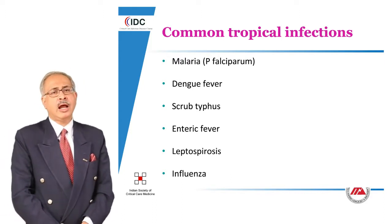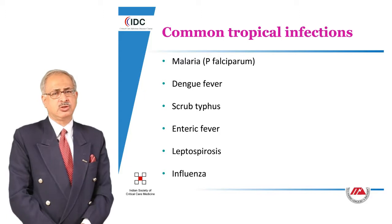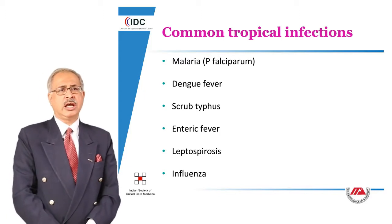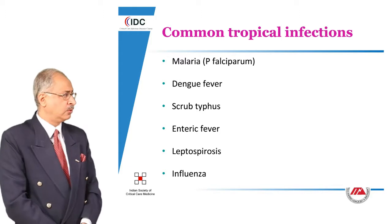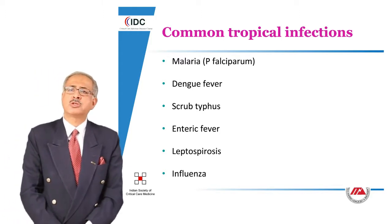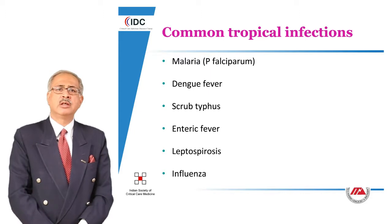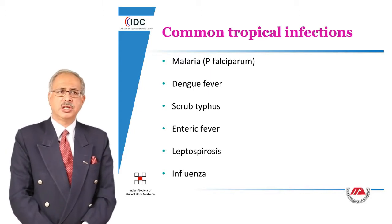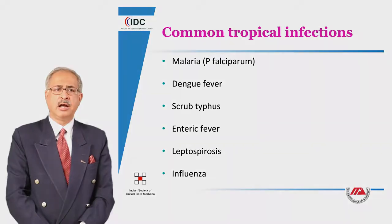Typhoid fever or enteric fever has always been present, and the same is true for leptospirosis, which we commonly see after the monsoon. Influenza, which is supposed to be a disease of temperate climates coming in winters, is practically showing perennial transmission in this country at one or the other end.